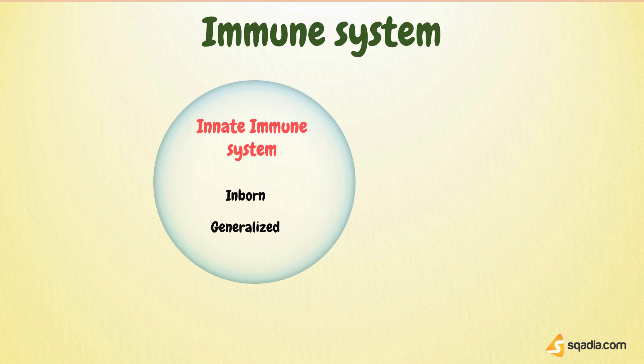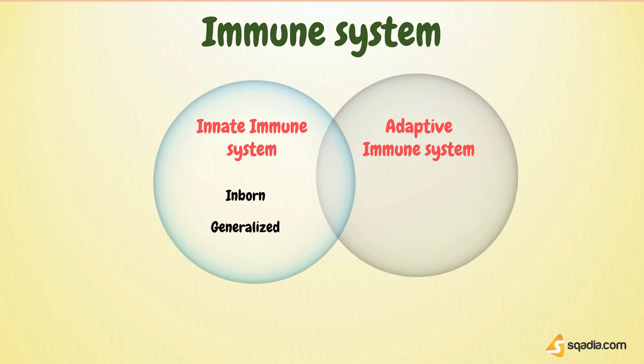Innate immunity is a generalized immunity against any type of foreign particles, or through adaptive immunity. This is another type of immunity that develops over time, and so it is called acquired immunity. Adaptive immunity is also known as specific immunity, as it performs specific actions against a particular pathogen.